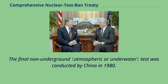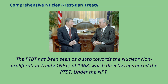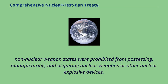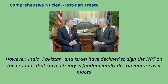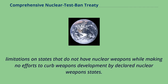The final non-underground test was conducted by China in 1980. The PTBT has been seen as a step towards the Nuclear Non-Proliferation Treaty of 1968, which directly referenced the PTBT. Under the NPT, non-nuclear weapon states were prohibited from possessing, manufacturing, and acquiring nuclear weapons or other nuclear explosive devices. All signatories, including nuclear weapon states, were committed to the goal of total nuclear disarmament. However, India, Pakistan, and Israel have declined to sign the NPT on the grounds that such a treaty is fundamentally discriminatory, as it places limitations on states that do not have nuclear weapons while making no efforts to curb weapons development by declared nuclear weapon states.